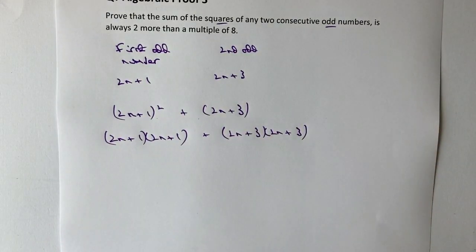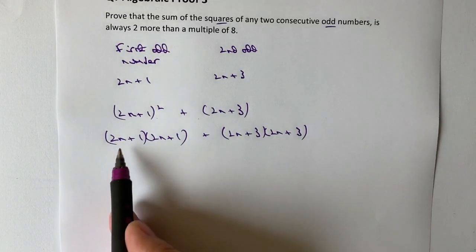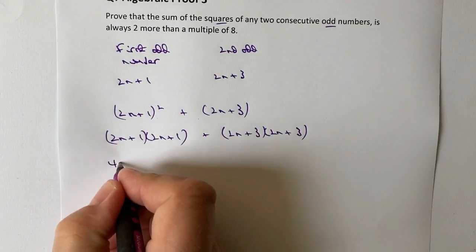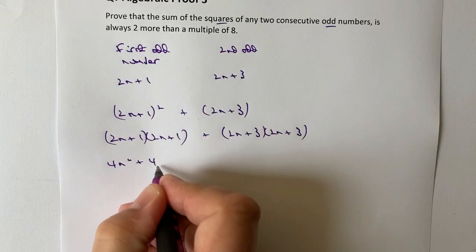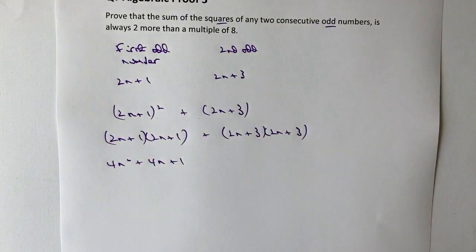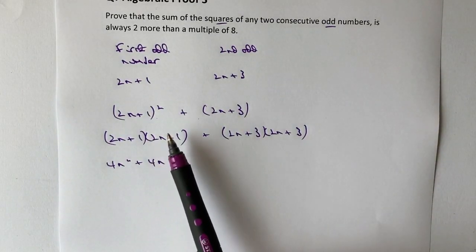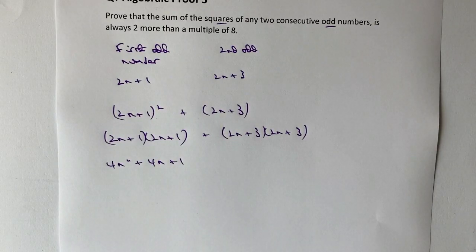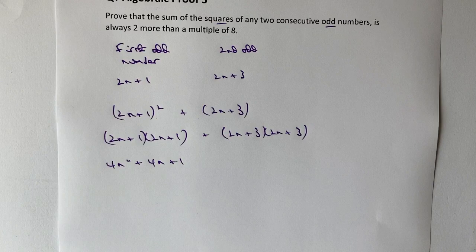So 2n plus 1 squared is going to be 2n times 2n is 4n squared plus 4n plus 1. Now, I'm very aware that you might use a slightly different method of how to do this. So if you're not sure, please do have a look at the playlist on expanding double bracketed terms. And that will give you a lot more practice in this sort of thing. You might use partitioning, for instance, but I haven't done that there. I've just done it mentally.